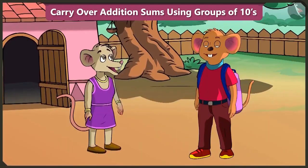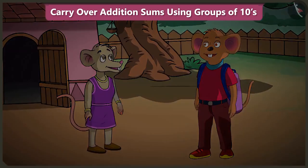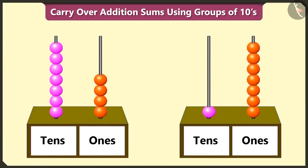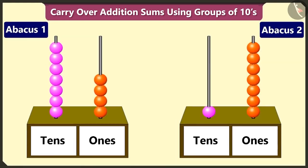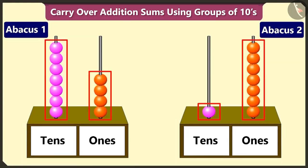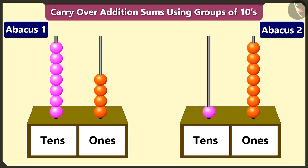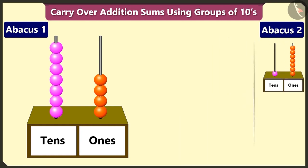We had great fun in the zoo yesterday, and we learned a lot as well. Give me some more examples to practice. Look, here are 2 abacuses. With the help of the abacus beads, try to identify the numbers and add them. In the first abacus, in the tens box, there are 7 beads. This makes it 7 tens, that is 70.